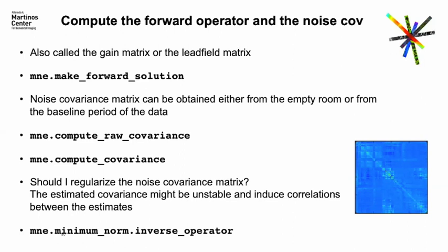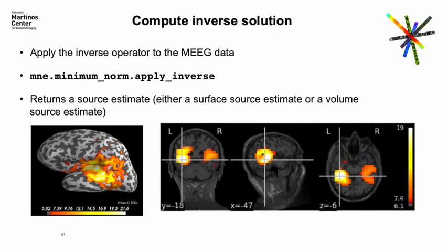Then once you get this inverse operator, you can apply it to your MEG data and you can get a source estimate. These are the standard figures that are seen in the MEG papers for surface source estimates. If you did a volume source, then you will get your estimate of your source activities in volume space.